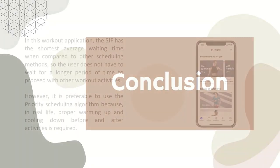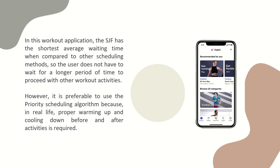Conclusion. In this workout application, SJF has the shortest average waiting time when compared to other scheduling methods, so the user does not have to wait for a longer period of time to proceed with other workout activities. However, it is preferable to use the priority scheduling algorithm because, in real life, proper warming up and cooling down before and after activities is required.